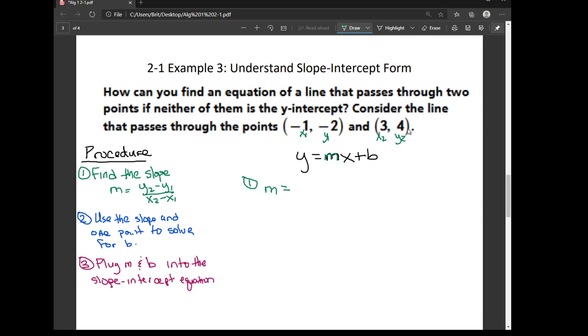If I put them in in the wrong order, if I flip the x1 and the y1, my slope comes out backwards. So y2 minus y1 is 4 minus negative 2, and then x2 minus x1 is 3 minus negative 1, that's just negative 1.